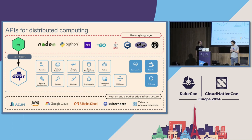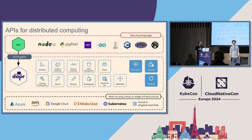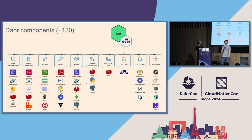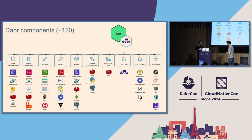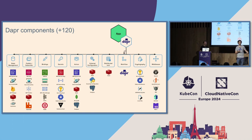Dapr runs really well on top of Kubernetes or just as a single binary that can run on your machine. It'll run on pretty much any Kubernetes cluster, including OpenShift. Dapr integrates with your existing stack — it's not a replacement to your infrastructure. It actually makes it better, more secure, and more reliable by providing features you don't always find when talking to the underlying database, PubSub, or Secret Store directly.